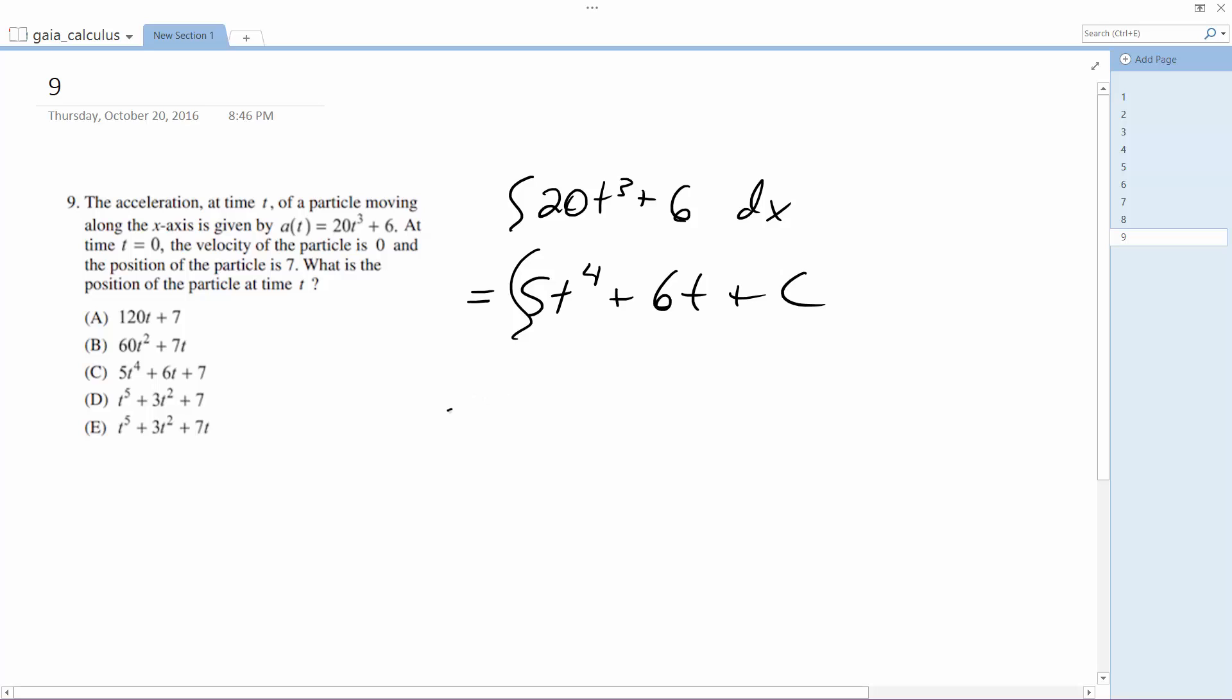We integrate it again. We're going to end up with t to the 5th plus 3t to the 2nd plus 7.